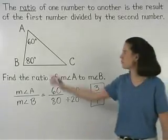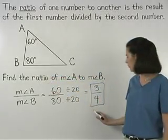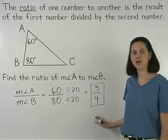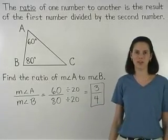So the ratio of the measure of angle A to the measure of angle B is 3 fourths. Remember to always reduce if possible when finding a ratio.